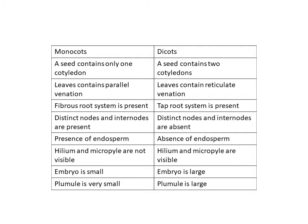Regarding the root system, monocots have a fibrous root system, which you can see in wheat, maize, and rice. In dicots, there is a tap root system. In monocots, distinct nodes and internodes are present, while in dicots they are absent. Also, monocots have endosperm which acts as food, but in dicots there is no endosperm.